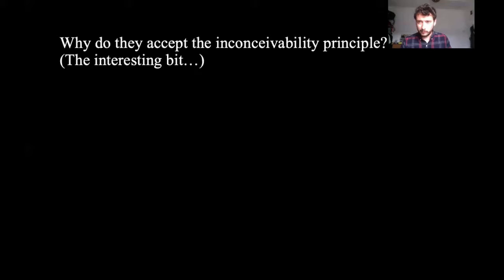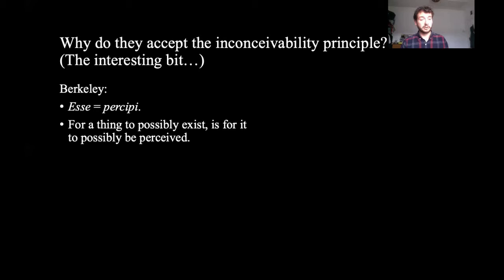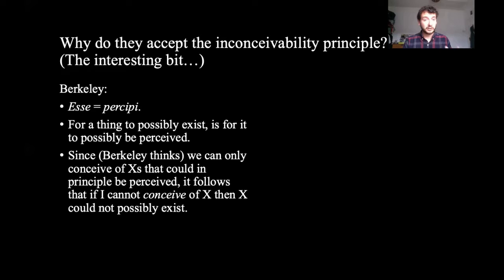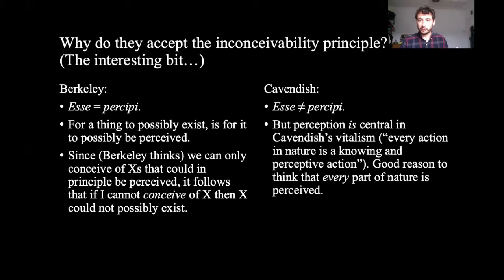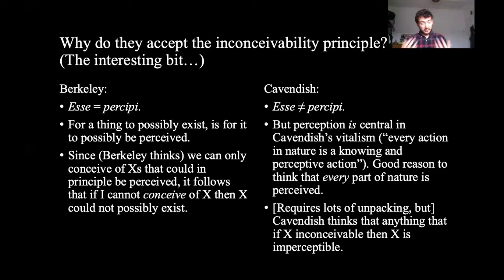The interpretive heavy lifting comes in answering why these thinkers accept the inconceivability principle. Berkeley thinks esse est percipi — for a thing to exist is for it to be perceived — which means for a thing to possibly exist is for it to possibly be perceived. Since Berkeley thinks we cannot conceive of something that could not in principle be perceived, it follows that if I cannot conceive of something, that something could not possibly exist. Cavendish does not think esse est percipi, but perception nonetheless plays a key role in her system of nature — she says every action in nature is a knowing and perceptive action, and there's good reason to think every part of nature for Cavendish is perceived.